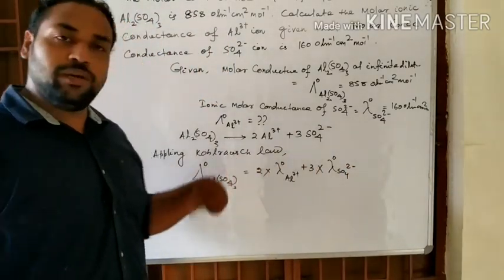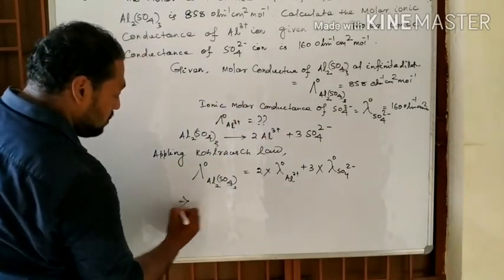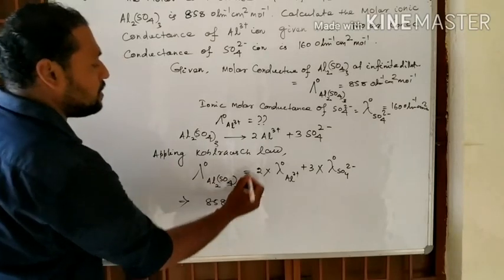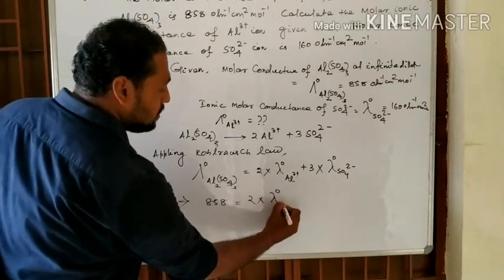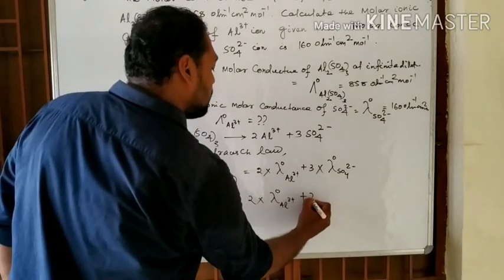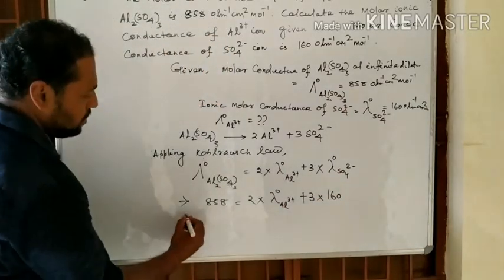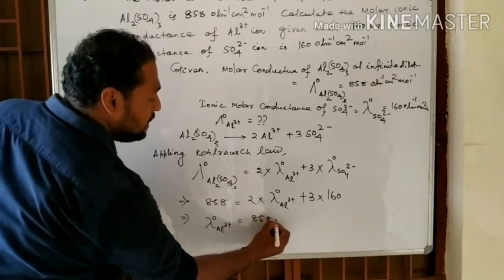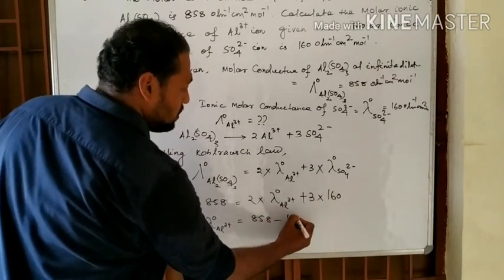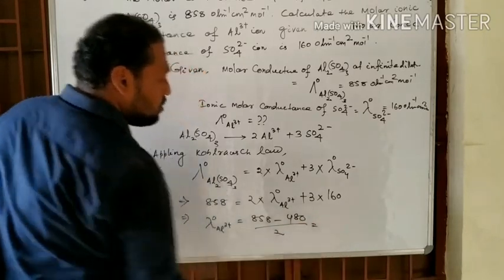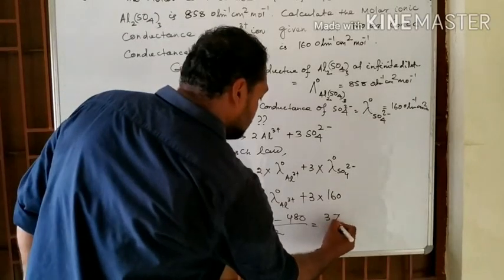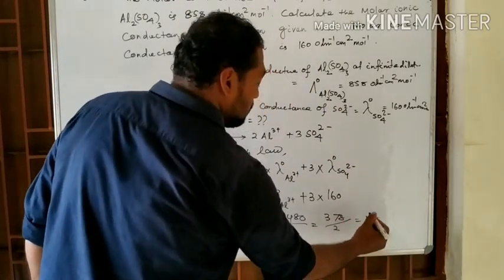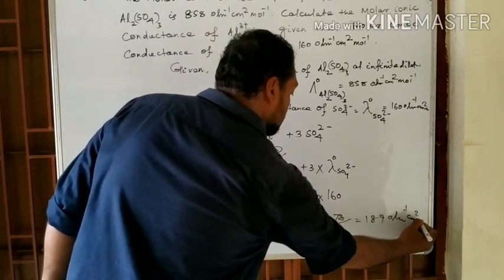Substituting the values: 858 = 2·λ⁰(Al³⁺) + 3·160. So 858 = 2·λ⁰(Al³⁺) + 480. Therefore 2·λ⁰(Al³⁺) = 858 − 480 = 378. Thus λ⁰(Al³⁺) = 378 ÷ 2 = 189 S·cm²·mol⁻¹ (ohm⁻¹ cm² mol⁻¹).